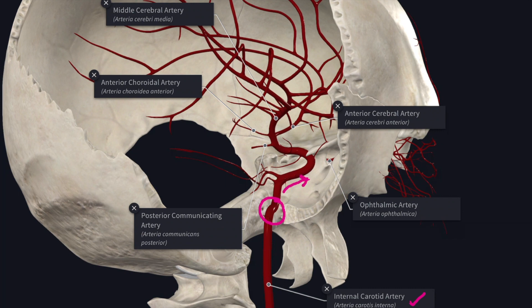It runs forward along the floor and the medial wall of the cavernous sinus, then it turns upward on the medial side of the anterior clinoid process. At this point, the artery pierces the dural roof of the cavernous sinus and also the arachnoid mater to enter the subarachnoid space.